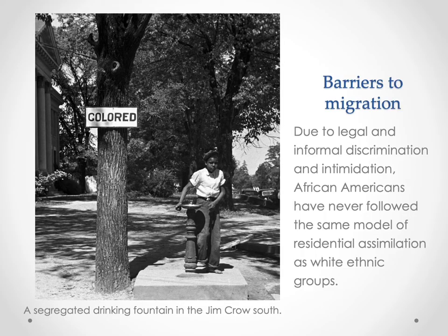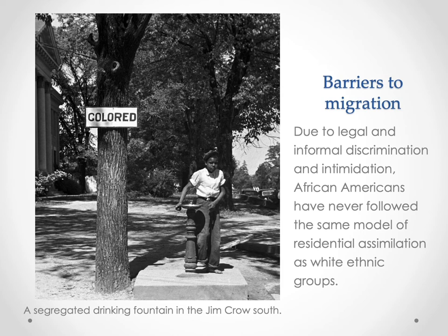There are multiple challenges and barriers to migration. Here we see a segregated drinking fountain in the Jim Crow South — a drinking fountain with a sign that says 'colored,' meaning that colored people, not white people, were allowed to use that fountain. Both legal and informal discrimination and intimidation highly constrained the capacity of African Americans to move residentially. So the pattern where migrants move into a neighborhood, become integrated, develop social skills and cultural ties, get a job, and then move out of that neighborhood was not experienced by African Americans, partially because they were highly constrained in the neighborhoods they could live in.